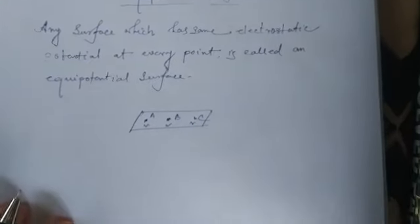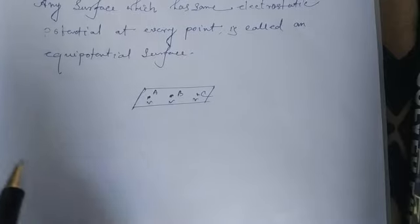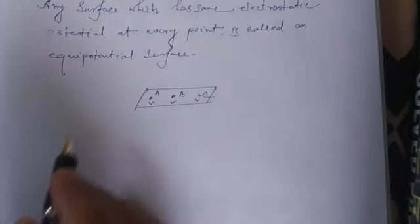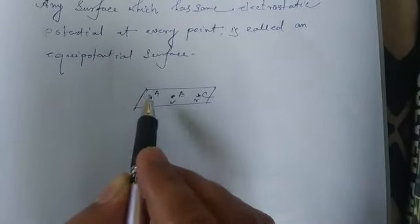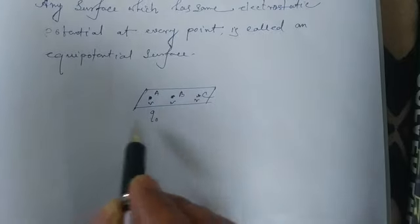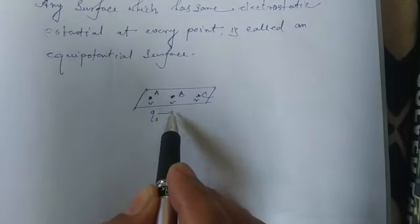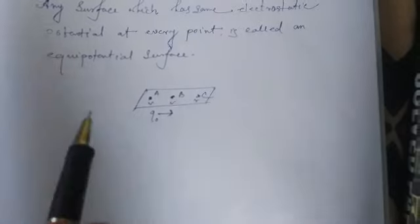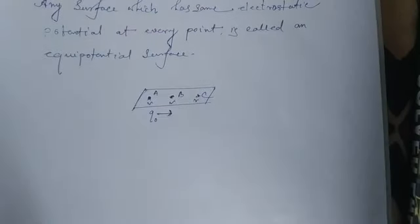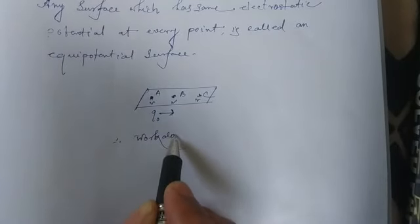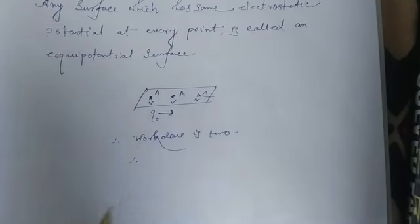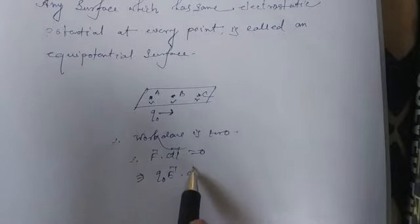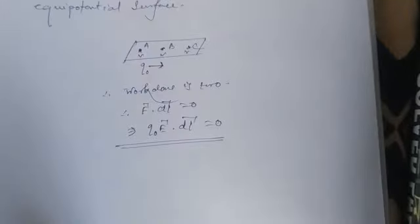At each and every point, potential is the same. Now for the equipotential surface, before starting the properties, let us discuss some basic things. Since the potential at each and every point is the same, to move a test charge Q-naught from point A to point B, the work done should be equal to zero — because the potential is the same, no work has to be done. Therefore, work done is zero. That means force dot displacement equals zero, or Q-naught times E dot dL vector equals zero.